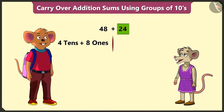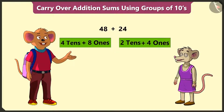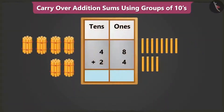24 means 2 tens and 4 ones. Now to add both these numbers, we have to place them in the tens and ones boxes.